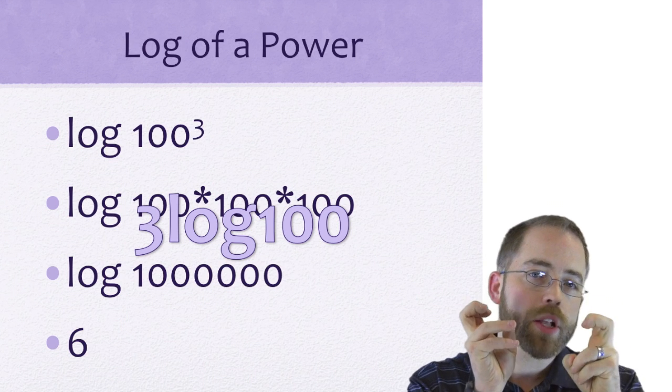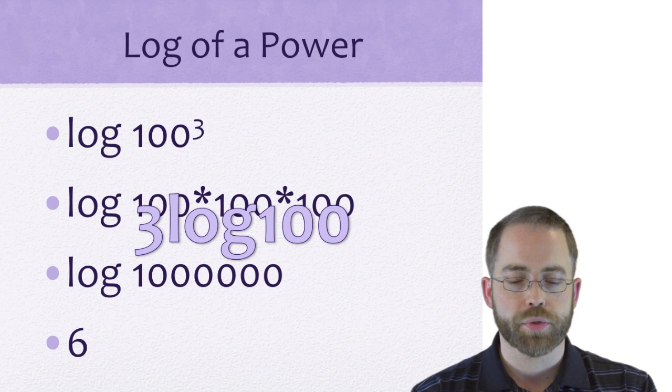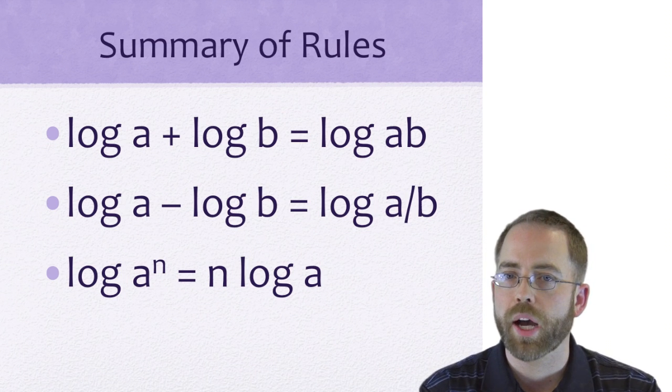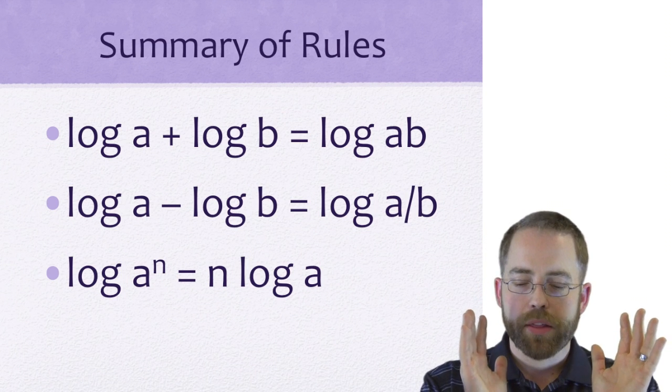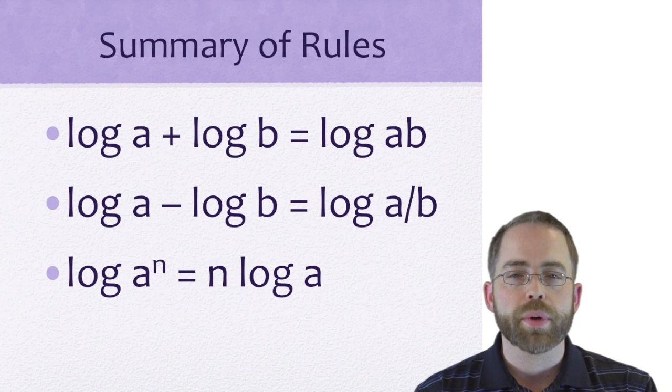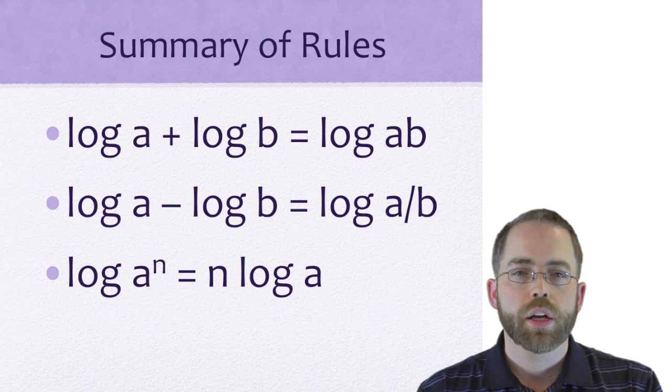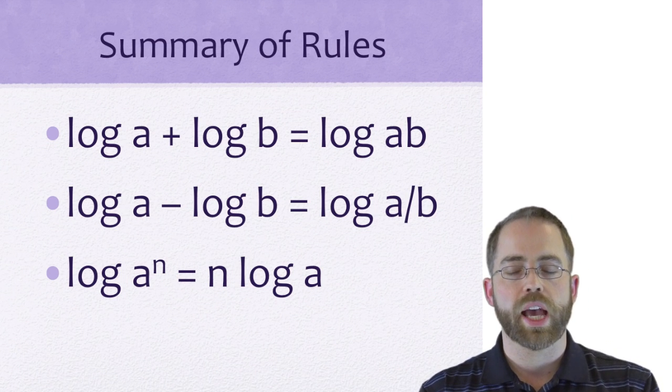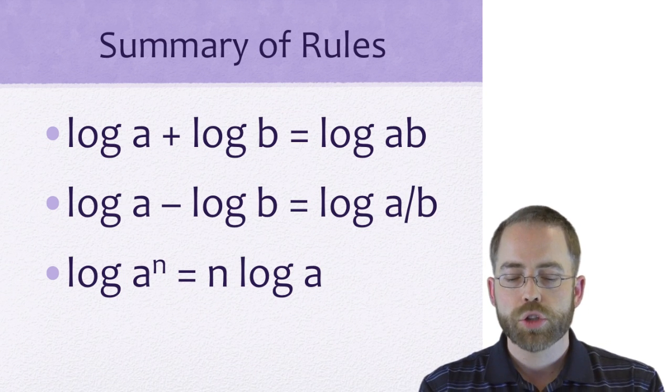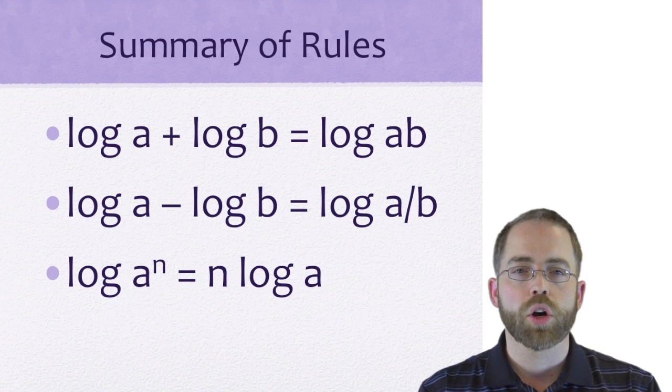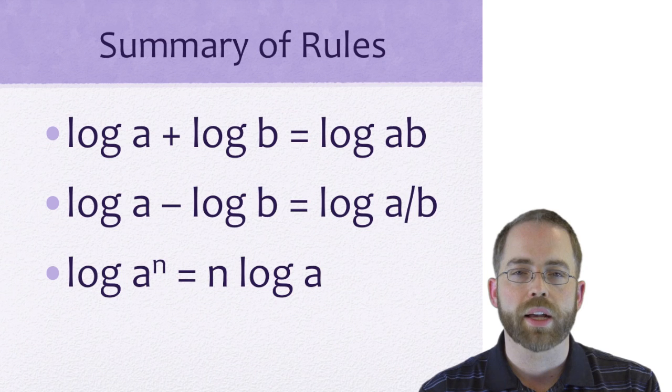Just like if you have a power to a power you multiply, if you have a log to a power you can pull that out front and multiply it out front. The summary here—this is a good page to just straight up copy into your notes—is the rules of exponents that we have apply, necessary changes being made, to logs. Two logs added is one log multiplied, two logs subtracted is one log divided, and a log to a power is the same as multiplying.